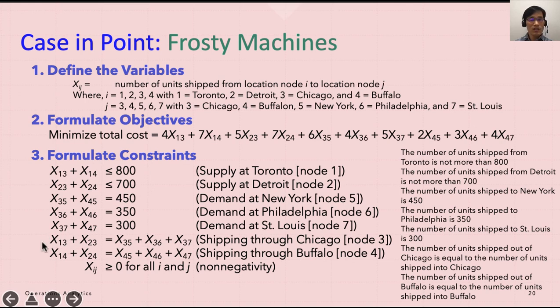And then we have interesting constraints. So shipping through Chicago has to be equal to the demand. So you cannot exceed your supply. So supply and demand has to be equal. That's what it means by that, or if you look at here, the number of units shipped out of Chicago is equal to the number of units shipped into Chicago. That has to be equal. So now, X13 and X23 is saying that it was shipped to Chicago.